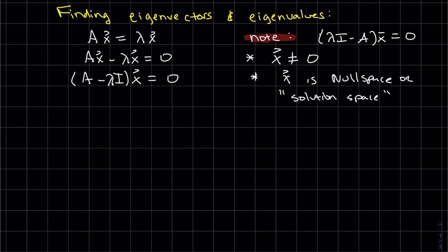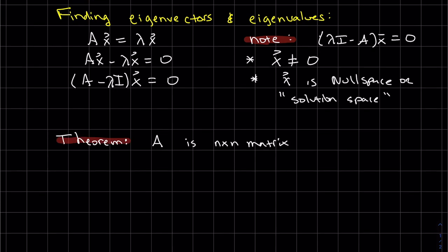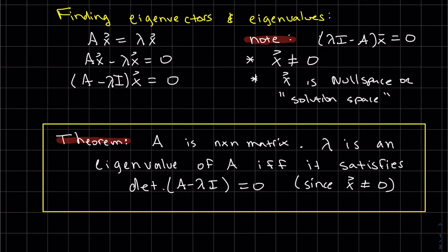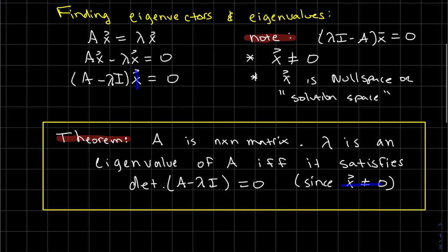So now I'd like to write out a theorem. If A is a square matrix and lambda is the eigenvalue of A, then it satisfies the determinant of A minus lambda I equals zero. And the reason is, since this cannot equal to zero, as I mentioned before, then that only makes sense that the determinant of A minus lambda I equals zero. So we can use that to actually find our eigenvalues, and this is how we're going to do it.